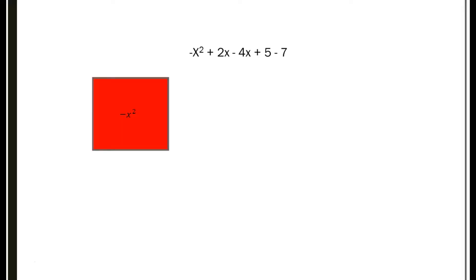I'm going to use manipulatives called algebra tiles to show you how we're going to combine like terms. For example, I have negative x squared plus 2x minus 4x plus 5 minus 7. The first one is going to be our negative x squared — that's going to be the red one, and it's red because it's negative. Notice that in front of x squared there is no number, so it's automatically assumed to be 1, and in this case a negative 1.